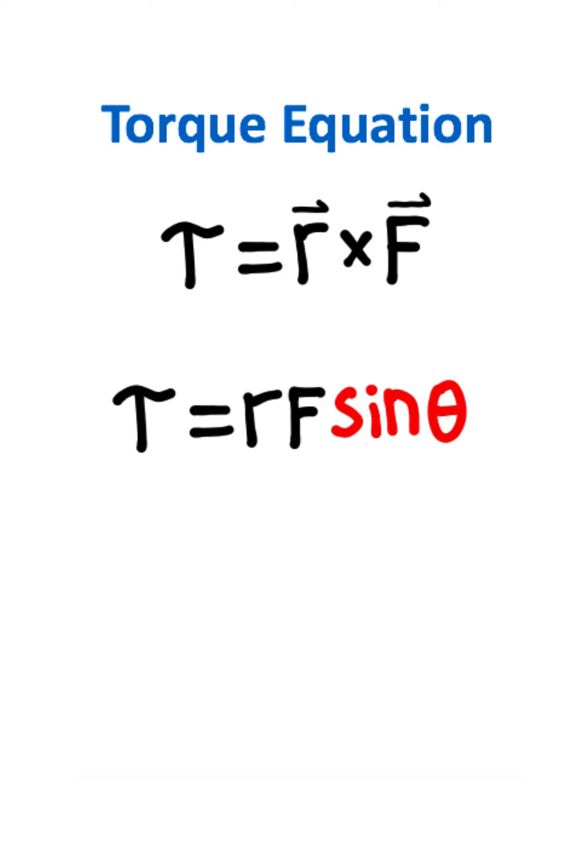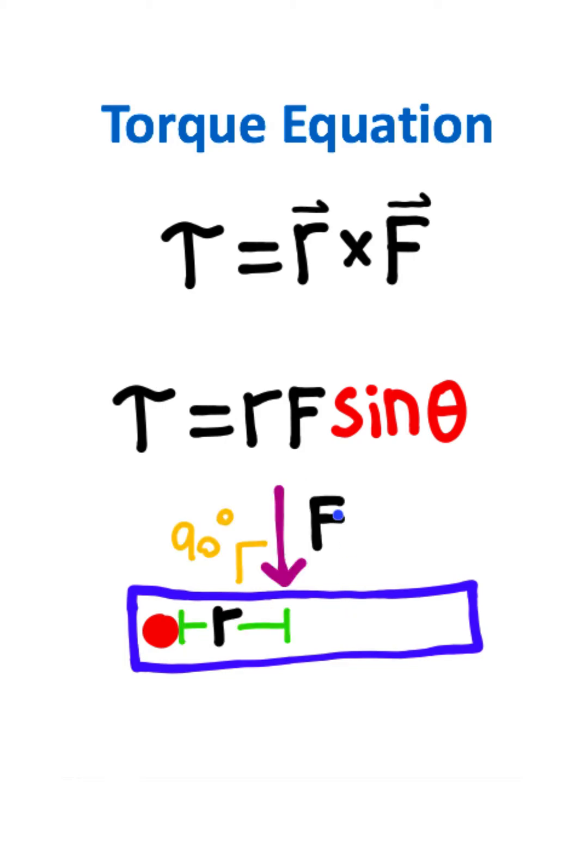Now I want to give you an example of using this equation. Let's say you're looking at a lever where the lever is attached to a knob which is the axis of rotation. Now let's say that you force the lever and notice how the force is perpendicular to the displacement from the lever arm.